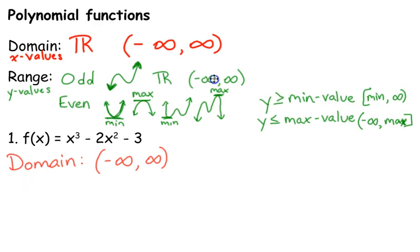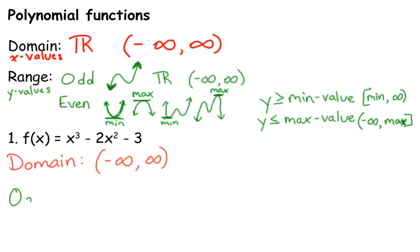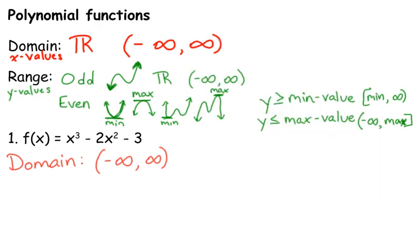Now, its range, I need to identify. Is it an odd or an even function? Is this one an odd or an even function? x cubed is odd. So, its range is, why did I just write odd? Dear goodness. Yes, its range is all real numbers. I'm trying to talk and write at the same time, and that's not always the best idea. Its range is all real numbers. So, from negative infinity to positive infinity. I apologize for erasing so much.